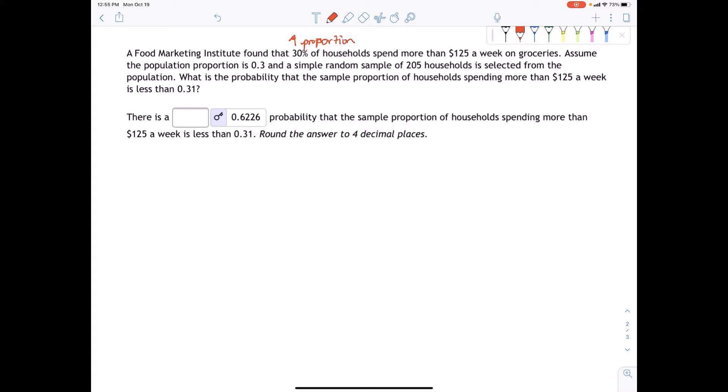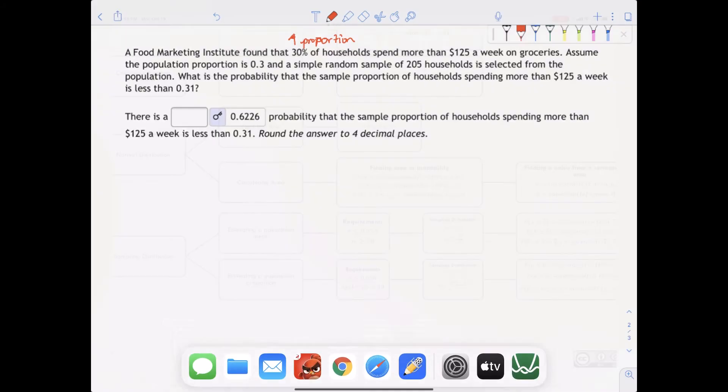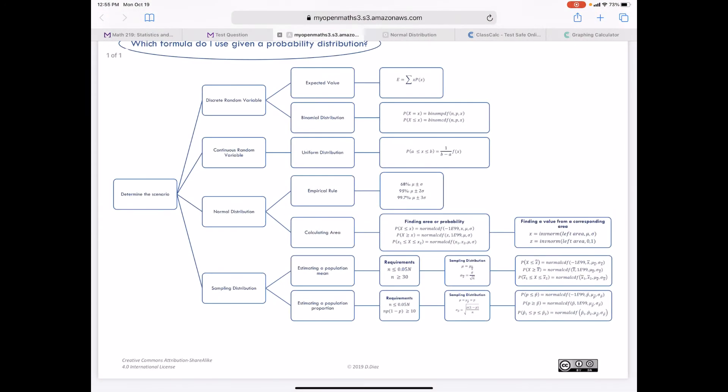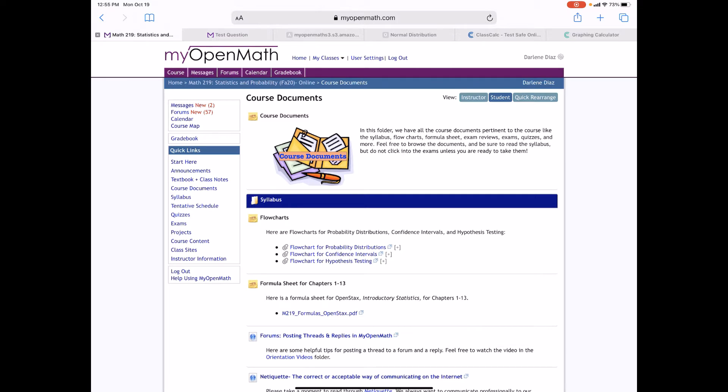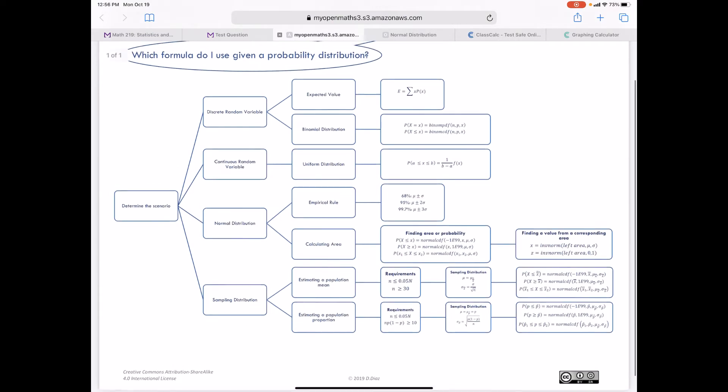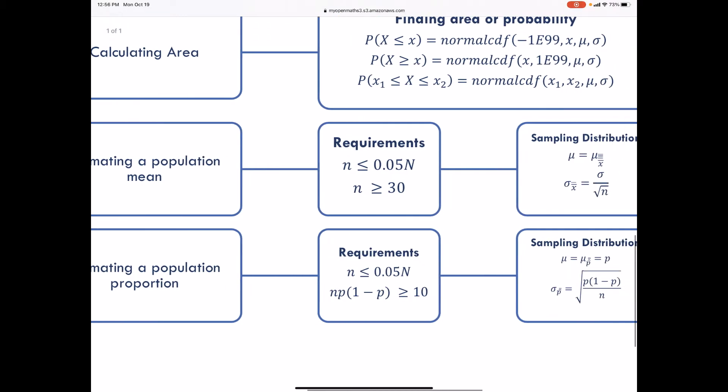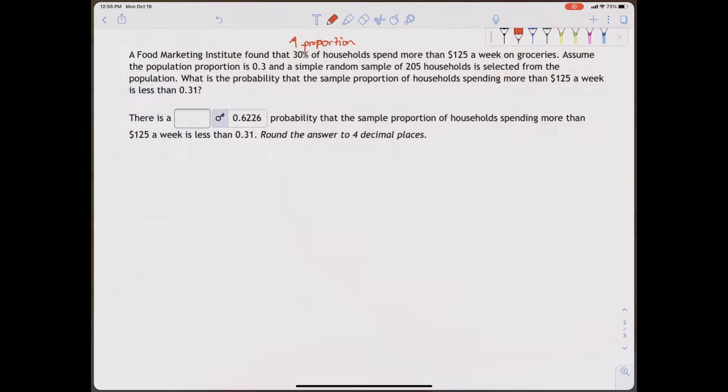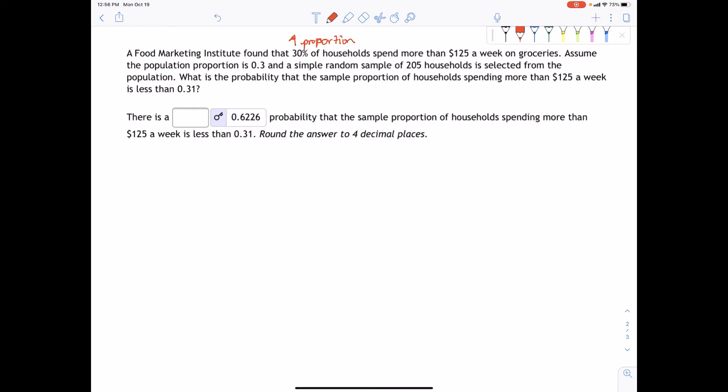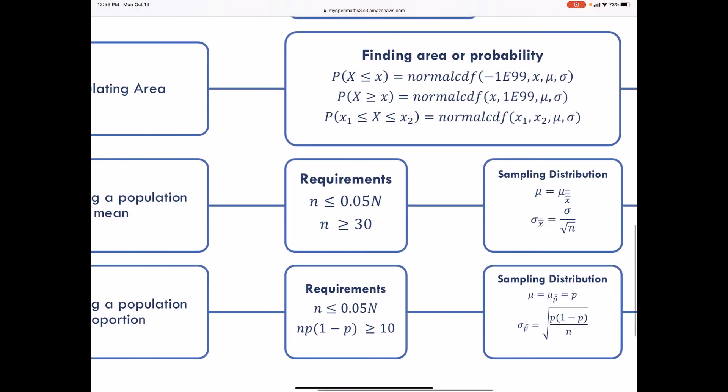If we go to our sampling distribution flow chart, which is in our course documents folder in our MyOpenMath course, and look for a proportion, we see that there are a couple of requirements. If we read the problem correctly, we see that they tell us there's a proportion and population, but they don't tell us that the population comes from an approximately normal distribution. So we'll have to verify these requirements.